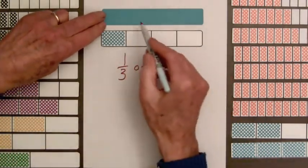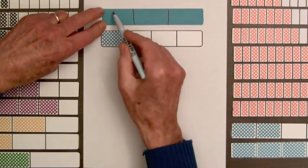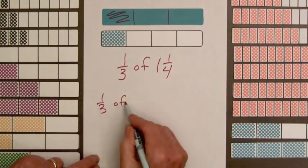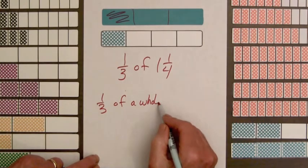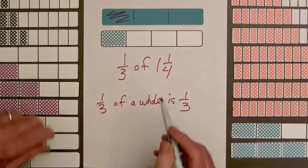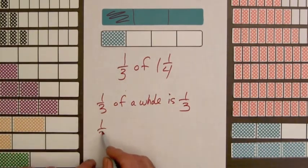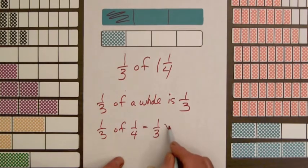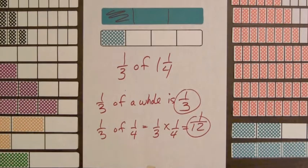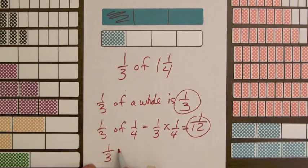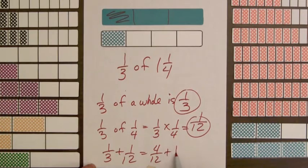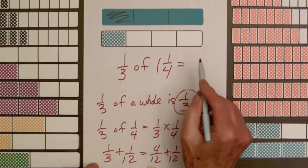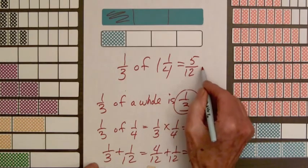We can divide this whole gallon of paint roughly into three parts and take one of those, so one-third of a whole is one-third. Then we want to take one-third of one-fourth, which we know is one-third times one-fourth, equaling one-twelfth. So we combine: one-third plus one-twelfth equals four-twelfths plus one-twelfth, which equals five-twelfths. Therefore, one-third of one and one-fourth is five-twelfths gallons.